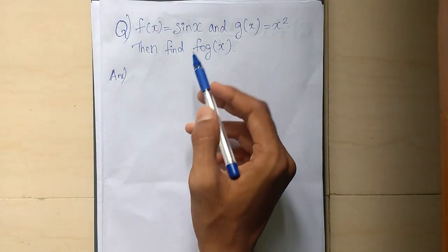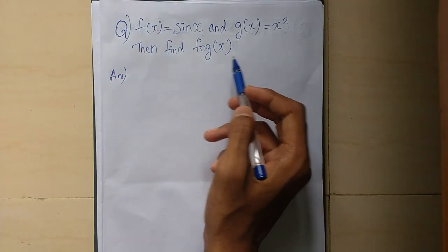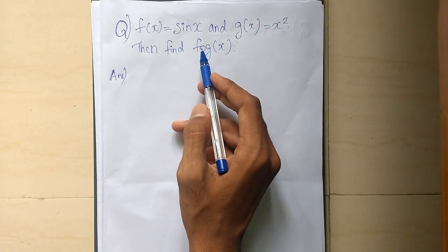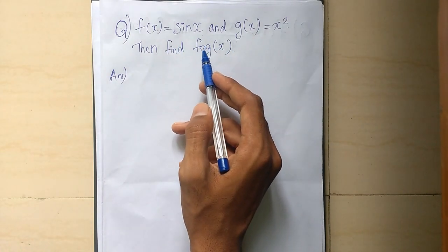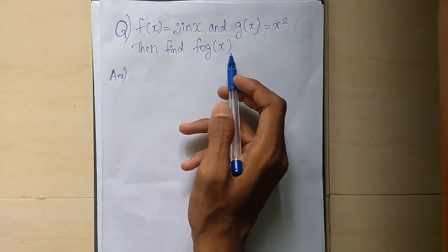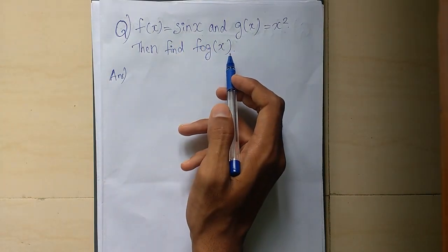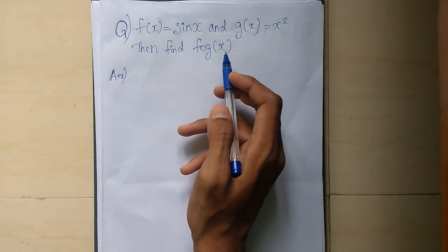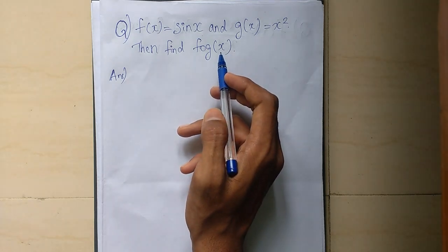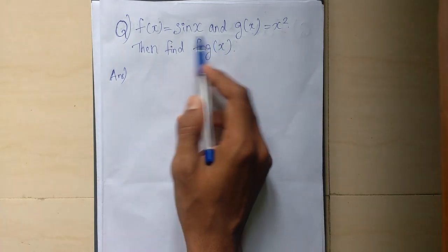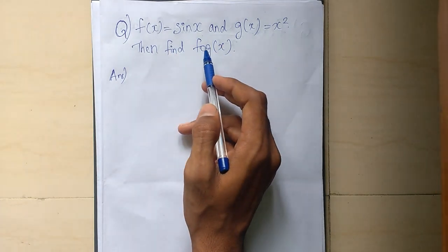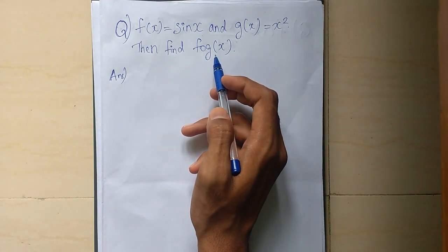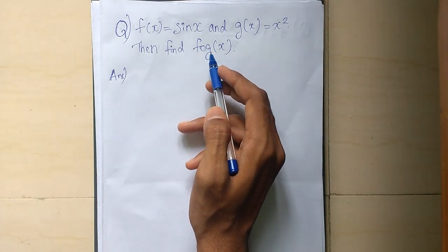Friends, we have a question about this topic. They will have questions — we will discuss all the questions about the same topic. This type of question is about f of g of x or g of f of x. These are the types of questions.